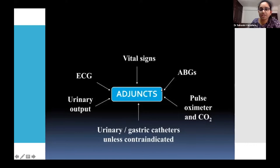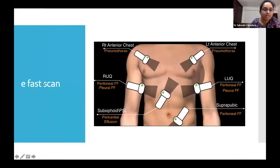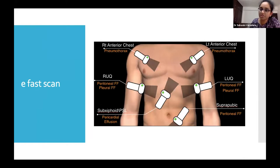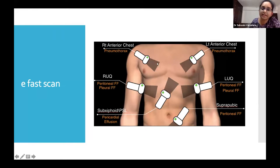Other adjuncts during the primary survey include vital signs monitoring, pulse oximetry, SpO2, arterial blood gases, urinary and gastric catheters, and ECG. The Focused Assessment with Sonography for Trauma (FAST) ultrasound helps quickly assess fluid collections at the right upper quadrant, left upper quadrant, pericardial space, suprapubic space, and anterior chest.